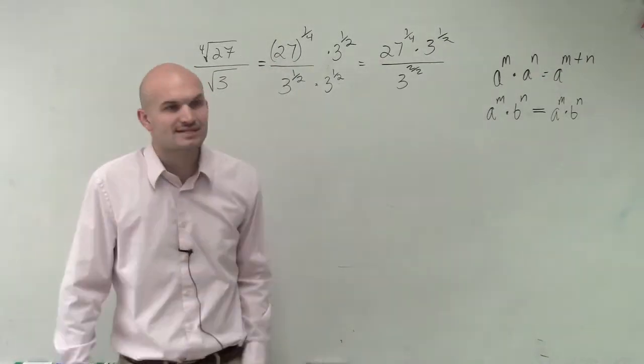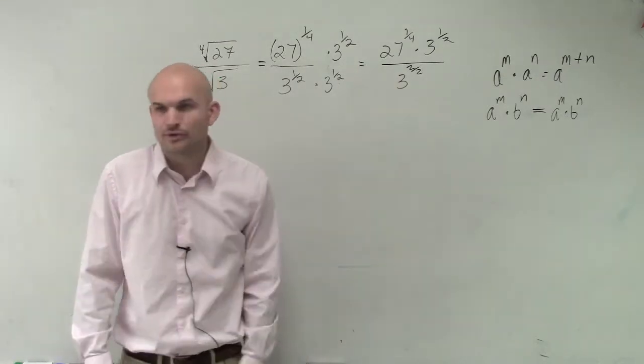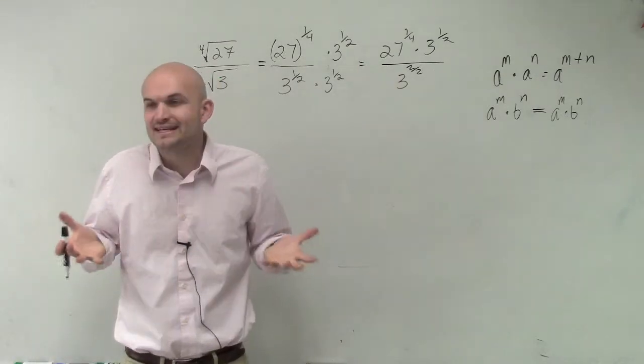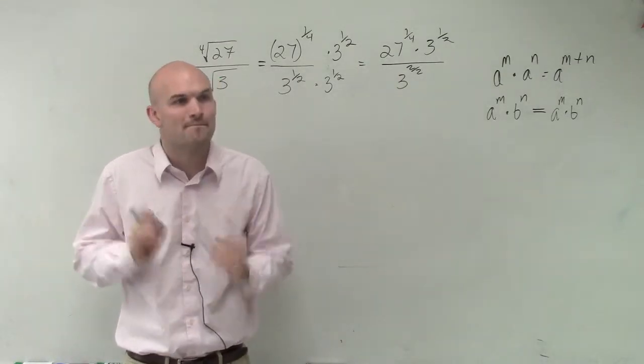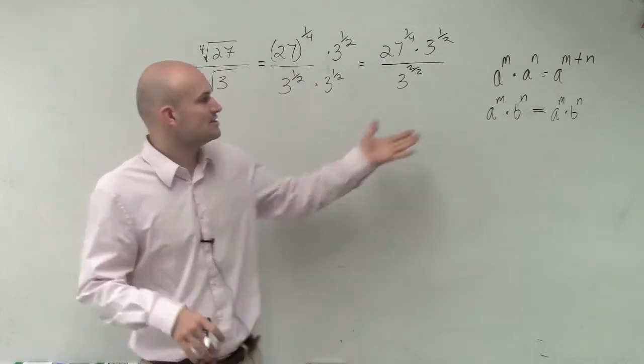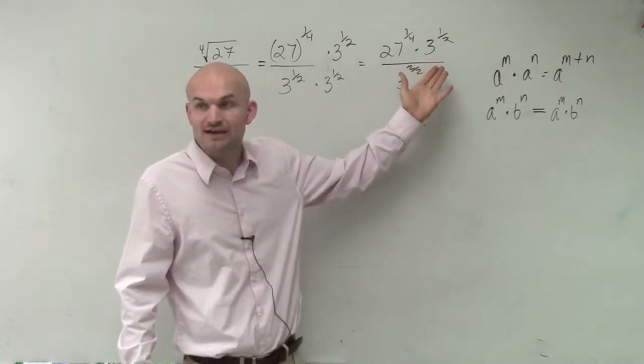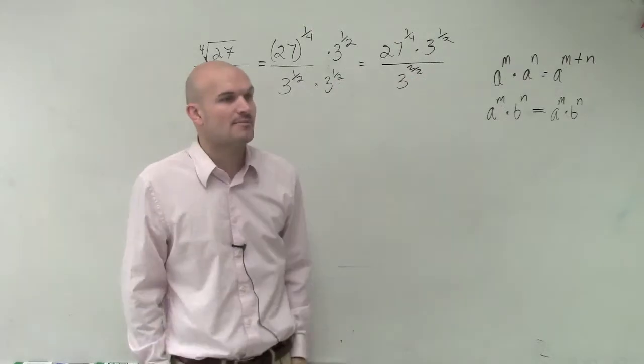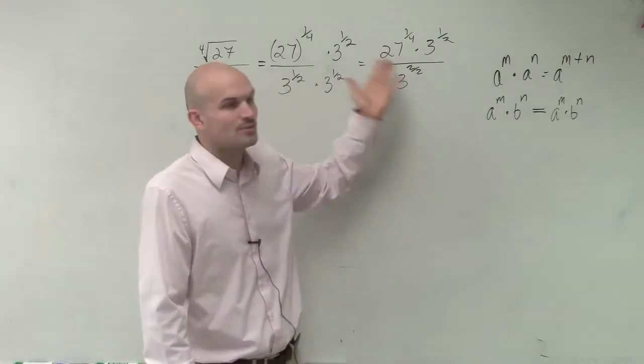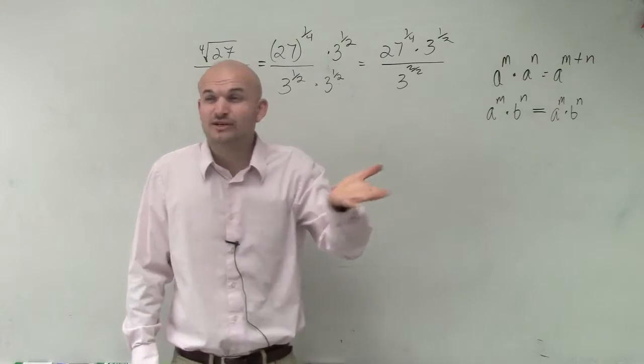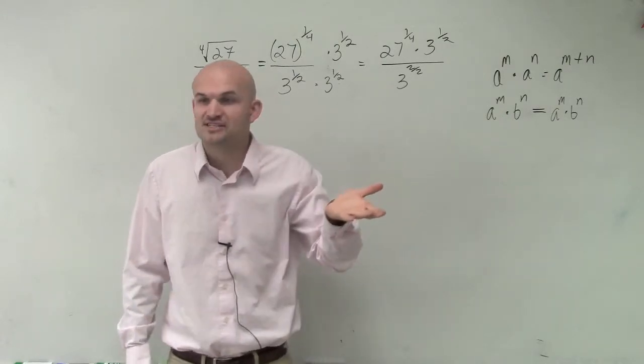So right now, we have a base of 27, or we have a base of 3. We need to get them to be the exact same base. So there's a couple ways. You could say, how can I make 3 into 27? Or you could say, how can I make 27 into 3? And let's look at the 27 going down to 3. So can we write 27 as a base 3?